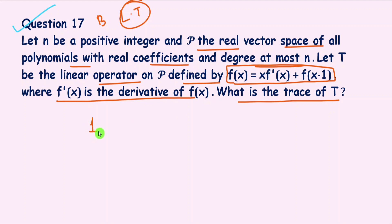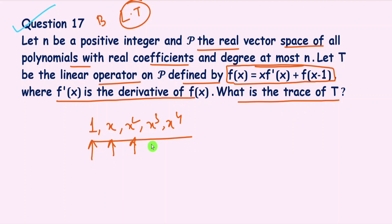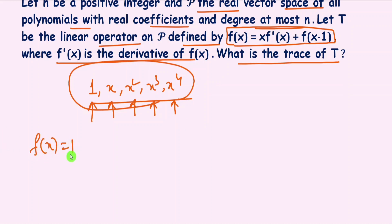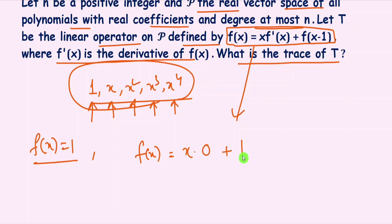We choose the basis polynomials: 1, x, x², x³, x⁴ — the 0th, 1st, 2nd, 3rd, and 4th degree polynomials. Now we calculate the matrix T for this choice. For f(x) = 1, from the equation T(f(x)) = x·f'(x) minus f(x−1), we get x·0 minus (1−1) = 0 − (−1), note there is a minus sign, so this equals minus 1.